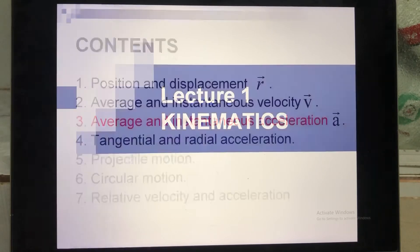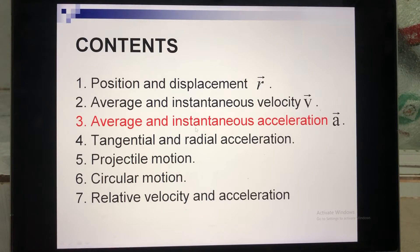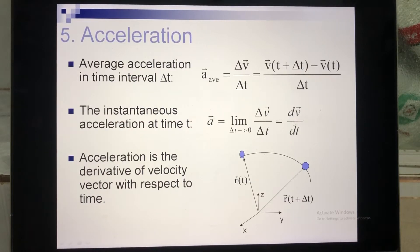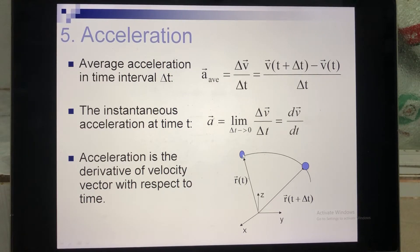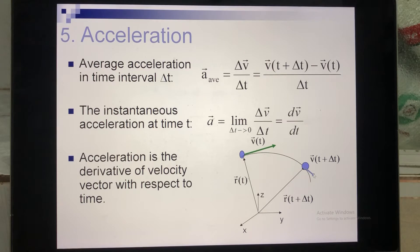We continue the lecture. In this video I will introduce average and instantaneous acceleration. To calculate the average acceleration, you take the change of velocity divided by the time needed to have that change of velocity. In this coordinate system, the first position and the second position are shown. The initial velocity is drawn as a vector, and the final velocity is drawn as another vector. To calculate delta V, the change of velocity, you subtract one vector from the other.